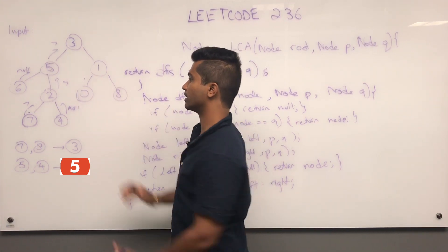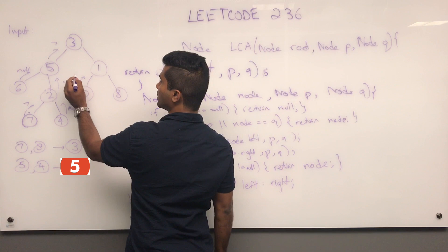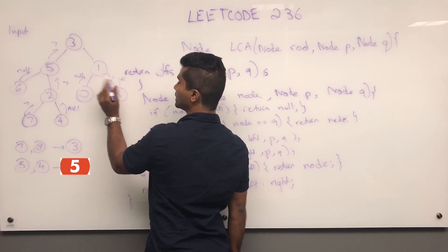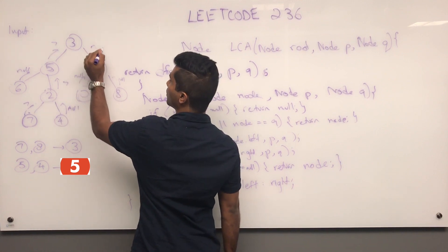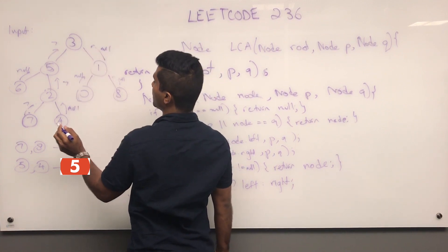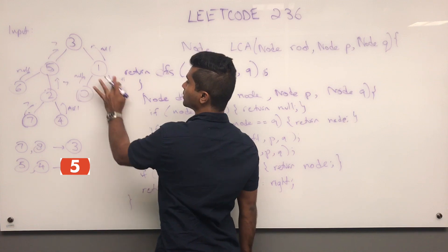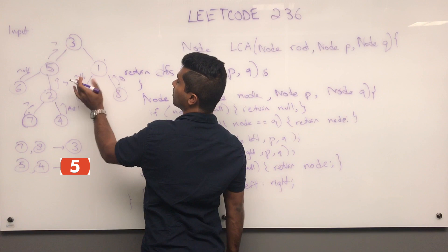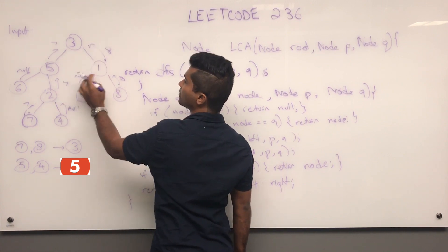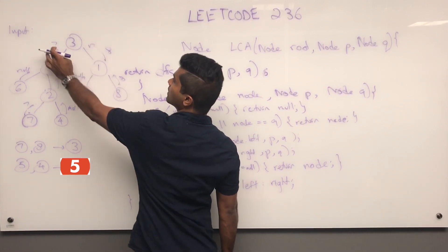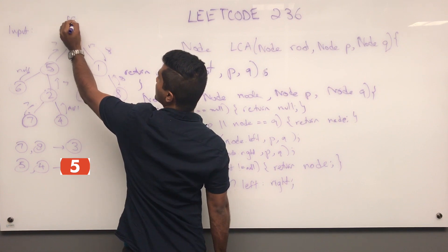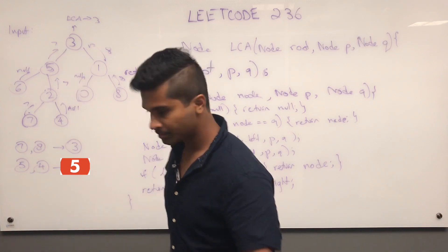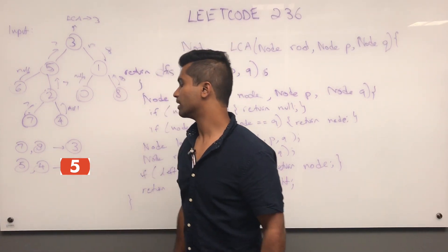One says it's not a target node, so it asks its children. Eight is actually a target node, so eight comes up. One has found eight, and seven has already come up from the left. So three now has two non-null results — one from the left subtree (seven) and one from the right subtree (eight) — making three the least common ancestor.